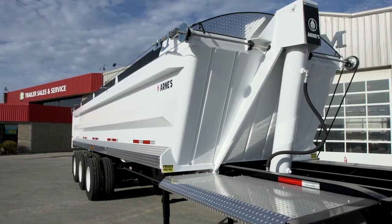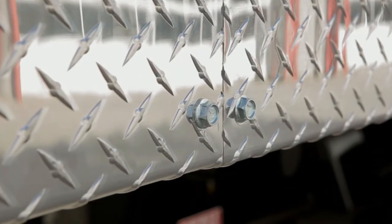Bright checker plate aluminum rub rails are easily replaceable to reduce repair costs.